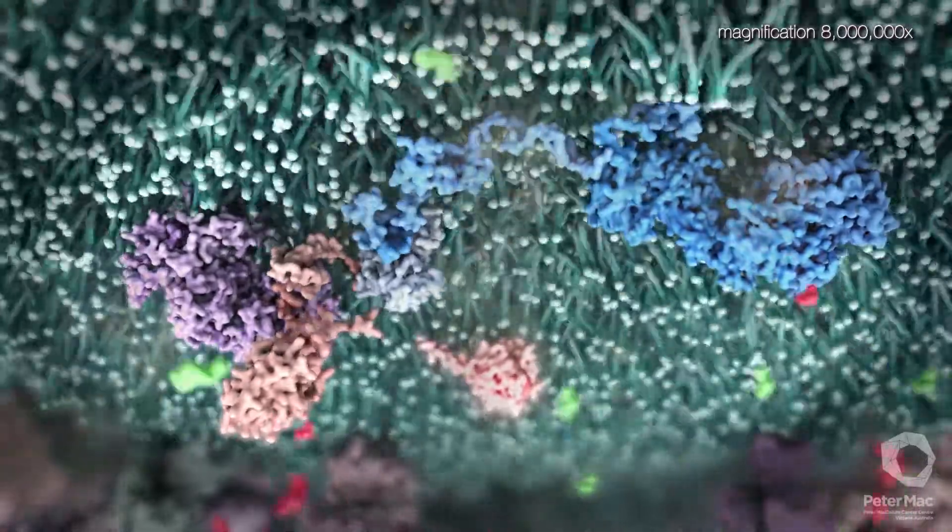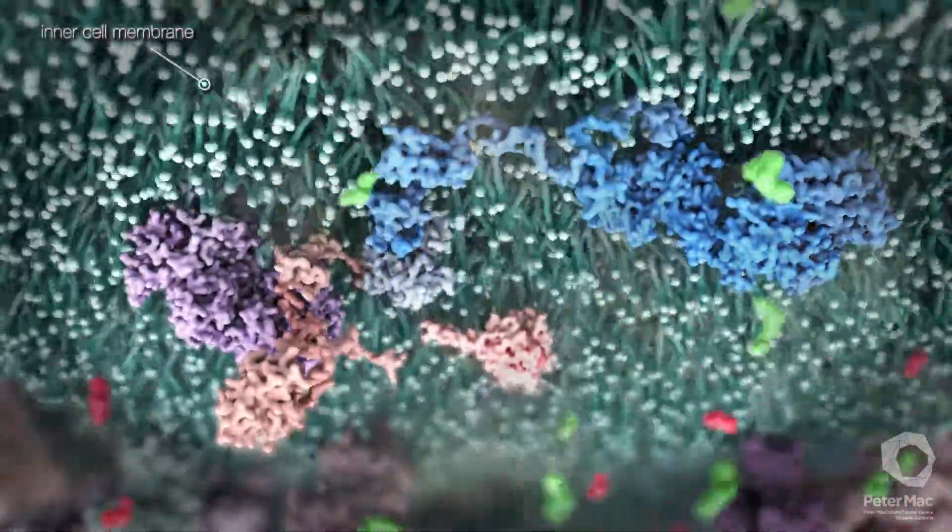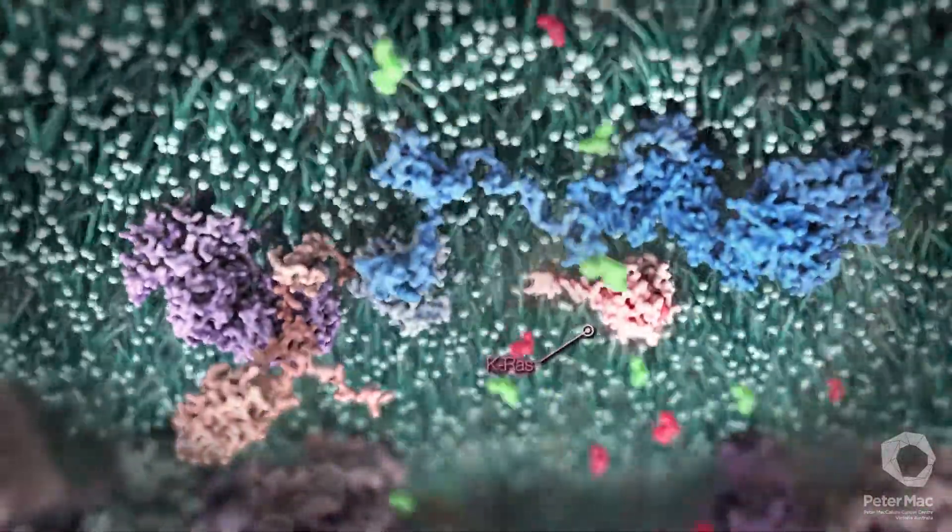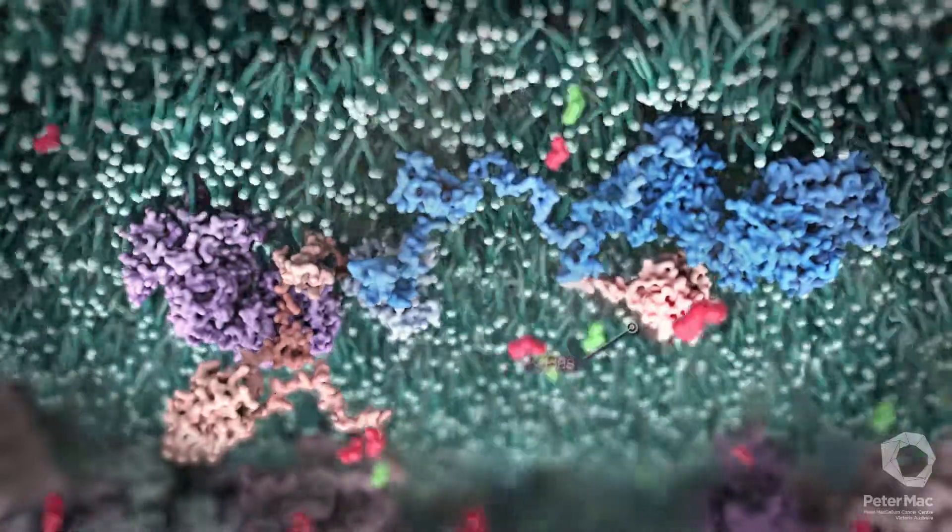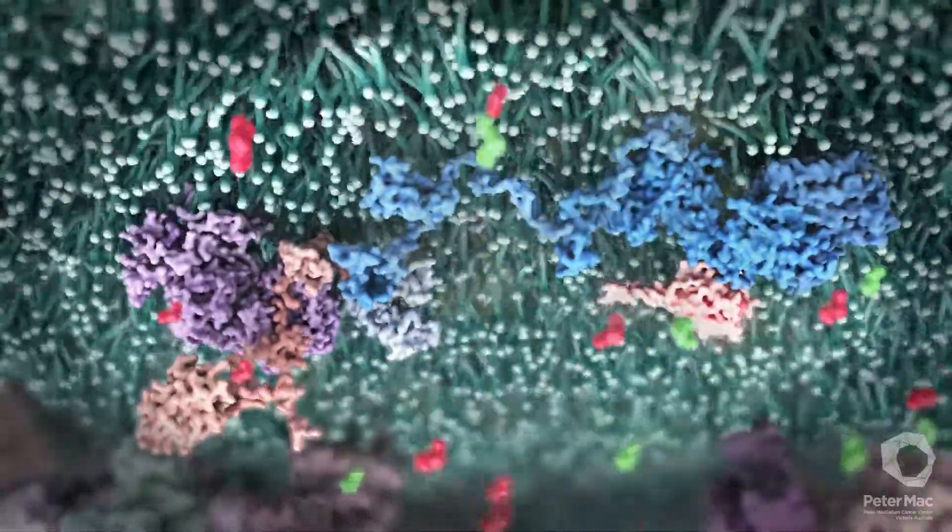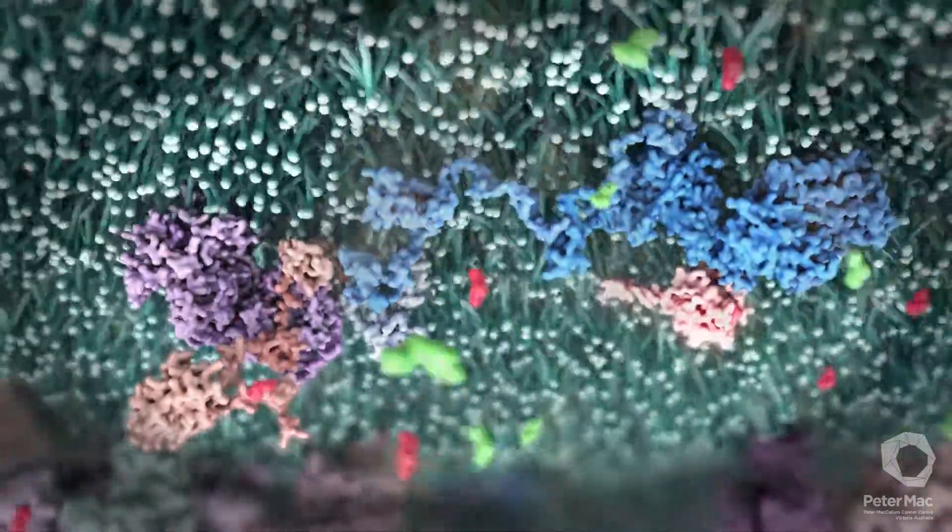In contrast to errors in defense mechanisms which allow accumulation of DNA damage, a change in this protein called RAS causes uncontrolled cell division. RAS is involved in the signaling within cells that controls how often a cell divides.